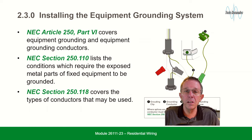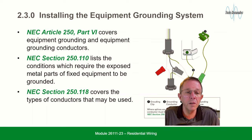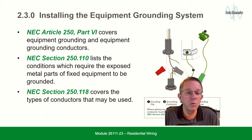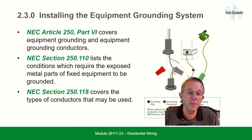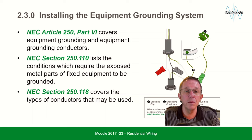Installing the equipment grounding system: NEC article 250 covers equipment grounding and equipment grounding conductors. NEC section 250.110 lists the conditions which require the exposed metal parts of fixed equipment to be grounded. NEC section 250.118 covers the types of conductors that may be used.